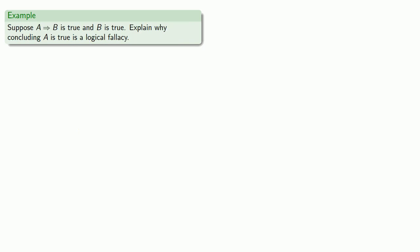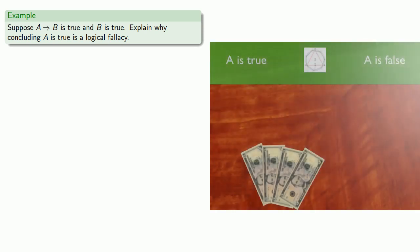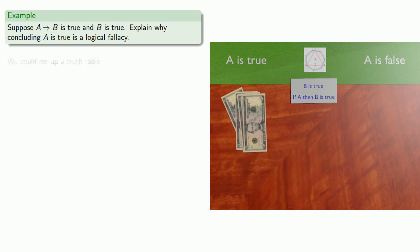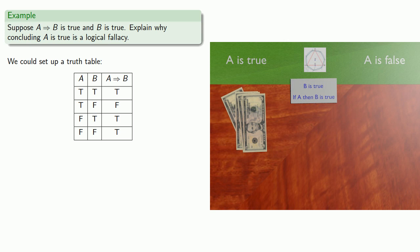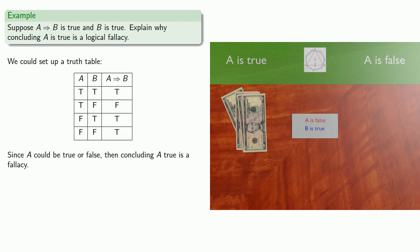How about another one? Suppose 'if A then B' is true and B is true. Let's explain why concluding A is true is a logical fallacy. Our huckster guarantees that B is true and the conditional 'if A then B' is also true. Are you willing to put $20 to say that A is true? Setting up a truth table, we know the conditional is true and the consequent is true, which puts us in one of these two cases. There's no way of knowing which case we're in, and since A could be true or false, concluding that A is true is a fallacy.